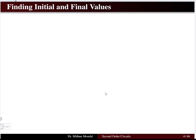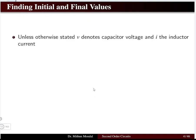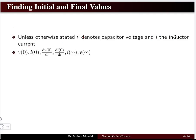In second order circuits, it is very important to find the boundary constants. So we must carefully understand the initial and final values or conditions. Unless otherwise stated, when we say voltage we mean capacitor voltage, and when we say current we mean inductor current. The initial and final values required to obtain the constants in the differential equation are obtained from the voltage and current.